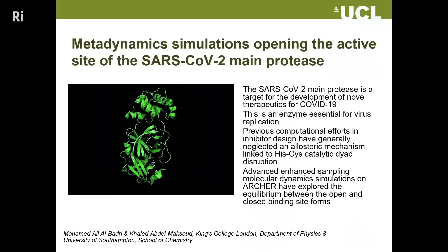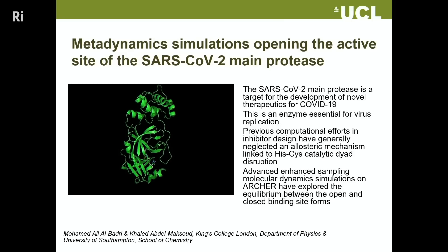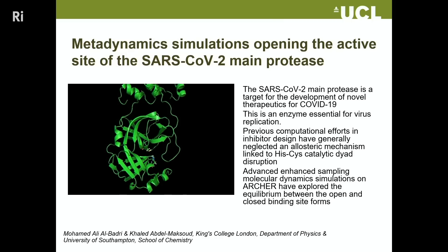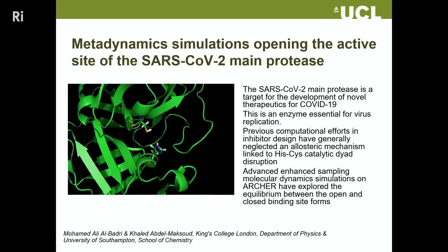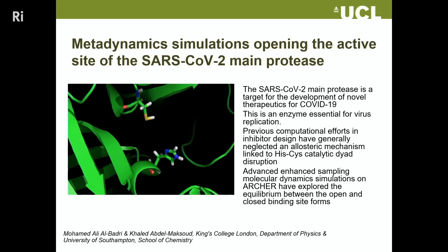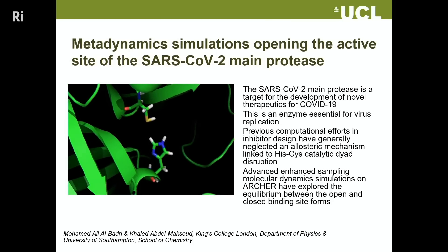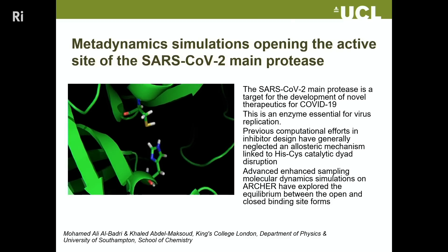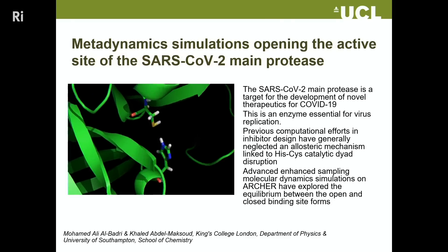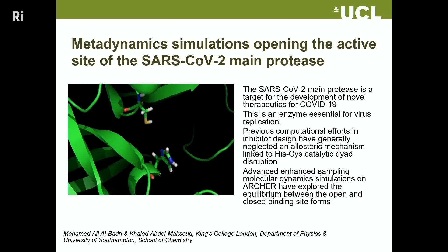This is an example of understanding, at the molecular level, how one of the key proteases vital in the reproduction of the virus can be inhibited by inhibitor drugs. The first thing to notice is that it's a dynamic entity — molecules are not static assemblies. Here you see the inhibitor molecule in the active site of the enzyme. We can get detailed information of how it behaves, and we can predict whether modifying that molecule will improve the efficacy of the inhibitor.